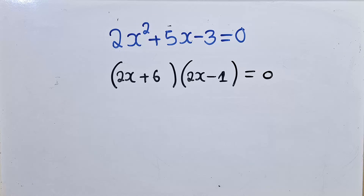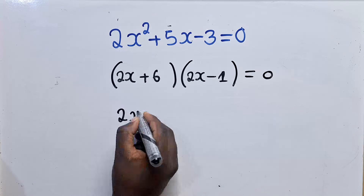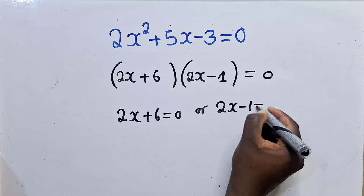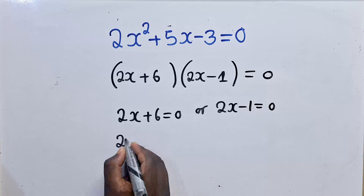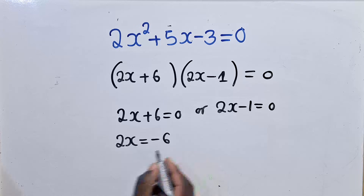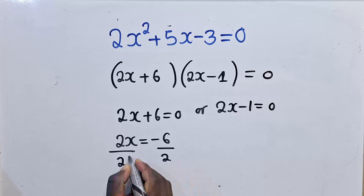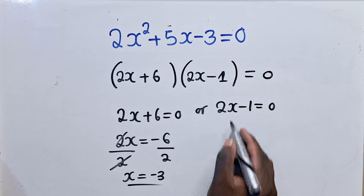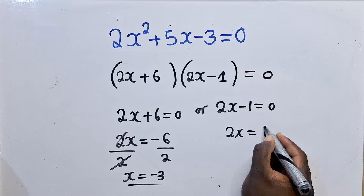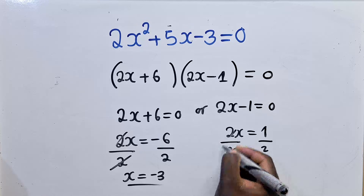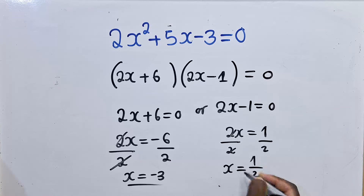From this stage, we can say (2x + 6) = 0 or (2x - 1) = 0. For the first: 2x = -6, divide by 2, x = -3. For the second: 2x = 1, so x = 1/2. These are the two solutions from the factorization method.